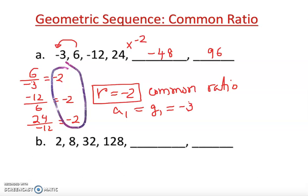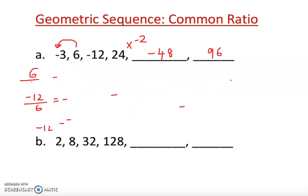Once we have the common ratio, we can find any missing number using the opposite operation. Now I'm going to introduce you to the general term of a geometric sequence. Let me erase this and show you the general term formula.